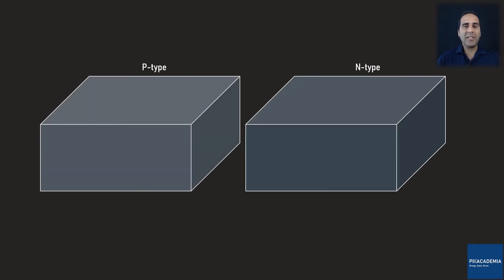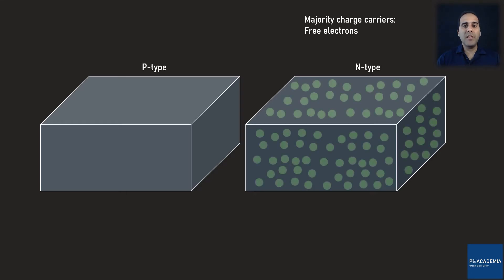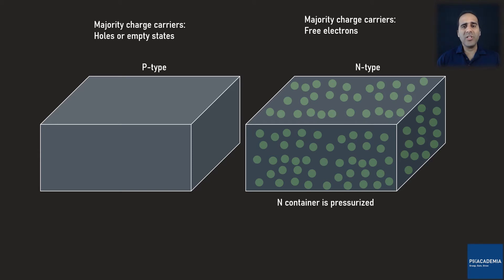You can imagine the PN type semiconductor as two gas containers. Free electrons in the N type semiconductor are the majority charge carriers and can be considered as gas molecules. Therefore, we can assume that the N container is pressurized. The majority charge carriers in P type semiconductor are holes, which are vacant sites, and the P type semiconductor has some free electrons as minority charge carriers. Therefore, we can consider the P type semiconductor as a container that is minimally pressurized.